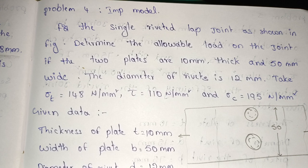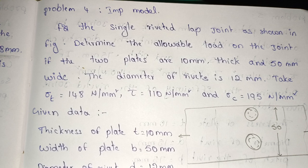If I asked a single riveted lap joint, determine the allowable loads on the joints. The two plates are 10 mm thick and 50 mm wide, the diameter of the rivet is 12 mm. Take Sigma T, Tau and Sigma C values as given.